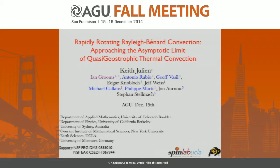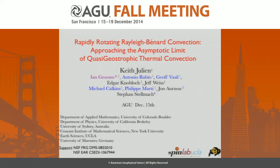Thank you. I'd like to thank the organizer for the invitation. This is really a collaborative effort between laboratory experiments going on at UCLA, DNS direct numerical simulations by Stefan Stelmark, and an asymptotically reduced model derived by the Colorado group to work in the limit of vanishingly small Ekman number or vanishingly small Rossby number. We're trying to see how well these three techniques overlap in describing the problem of rotating Rayleigh-Bénard convection.